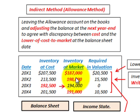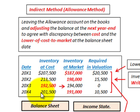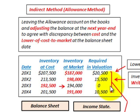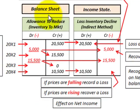Moving through subsequent years: in 20x2 the difference requires a write-down of $15,500. In 20x3, inventory at cost was $192,500 and market value was higher, so no write-down is needed — the required valuation is zero. In 20x4, market value is again less than cost, requiring a write-down of $10,500. These are our inventory write-down amounts using the lower of cost or market rule.